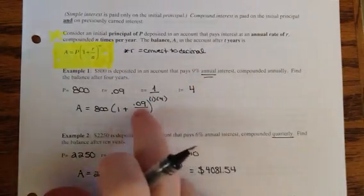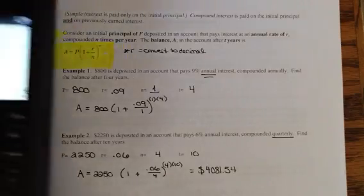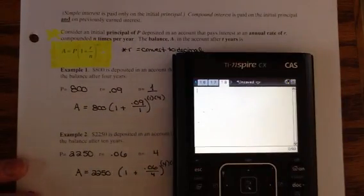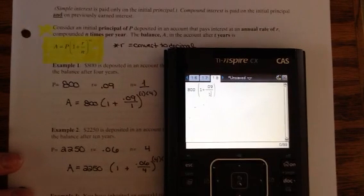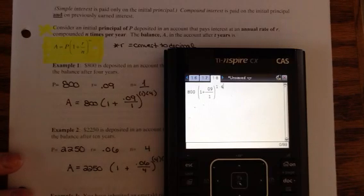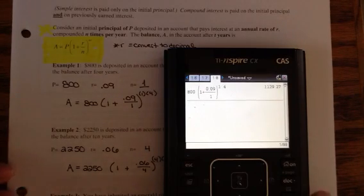I know that it seems silly to put the 1 and the 1 there, but the reason I'm doing that is all I'm going to do literally is type this into my calculator. So I'm going to type 800 times parenthesis, 1 plus fraction .09 over 1, and then raise it to the 1 times 4 power. Enter. So there's my answer.